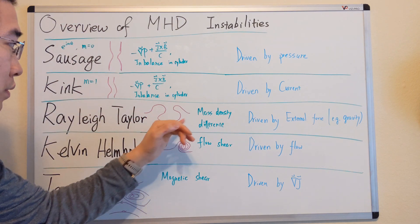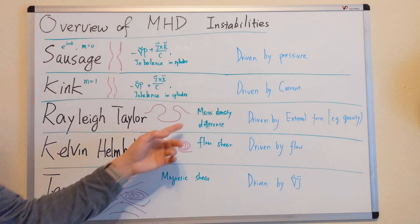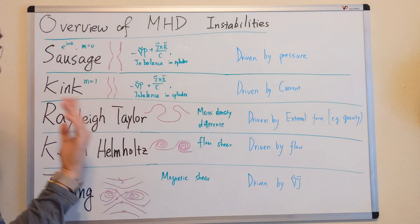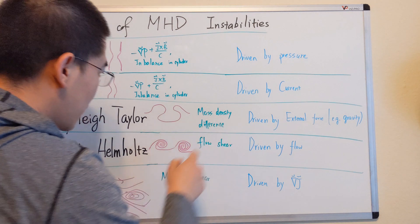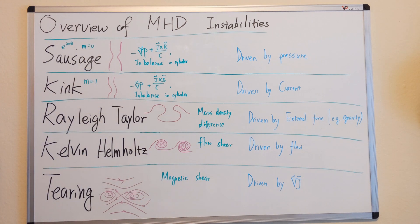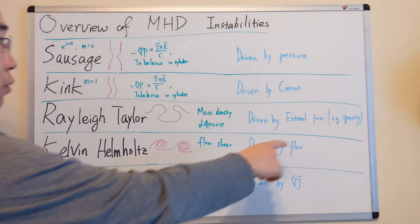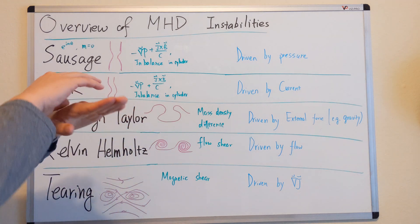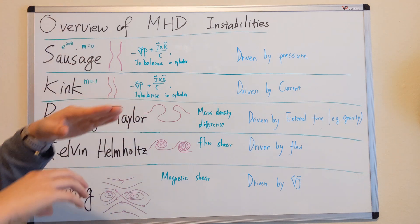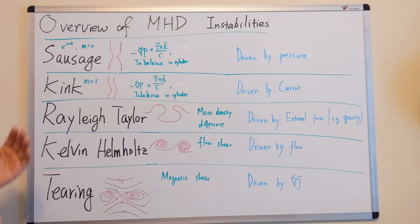This instability is driven by the mass density difference, and it's driven by an external force. The very classic case is driven by gravity, where the upper and lower regions have different mass density.